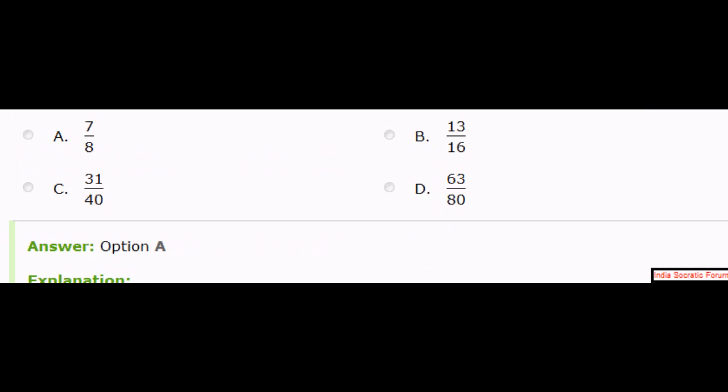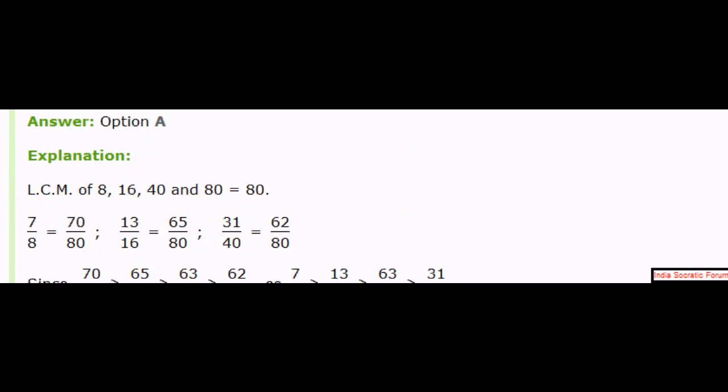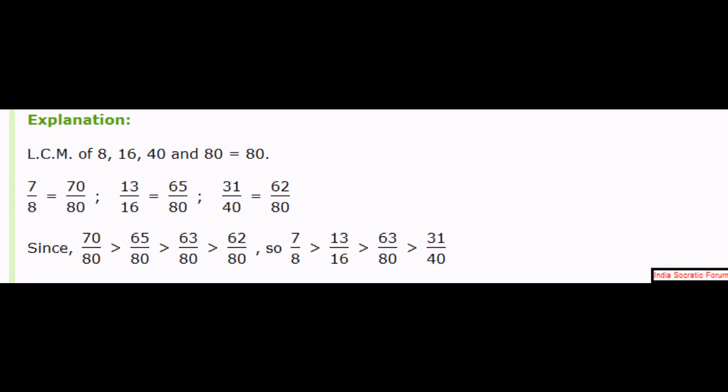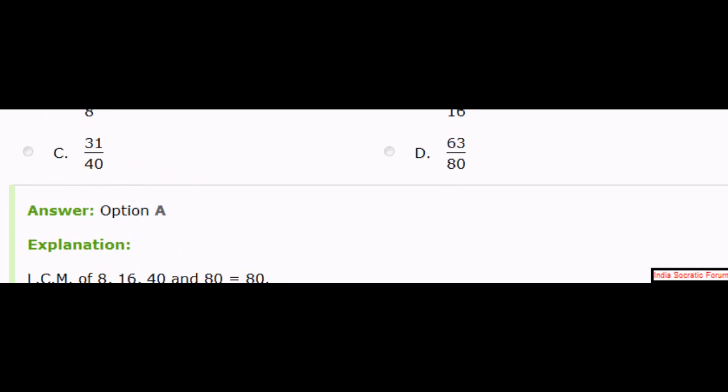Okay. The answer is option A. How did we get that? LCM of 8, 16, 40, and 80 is 80. So 7 by 8 equals 70 by 80. So you remember when you find out the LCM, you bring the denominator and the numerator to the same level. It is 80 multiplied by 10, 16 multiplied by 5, like that. Then you know since the denominators are same, the numerator decides the largeness. So 7 by 8 is obviously the right answer.